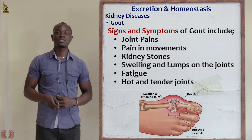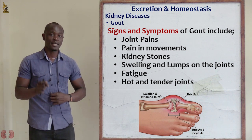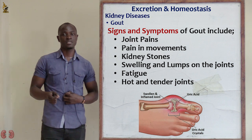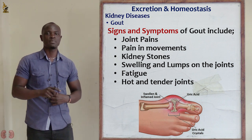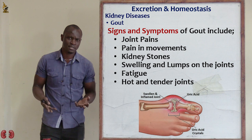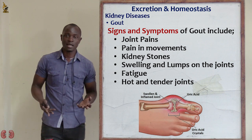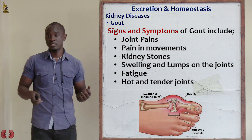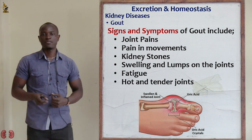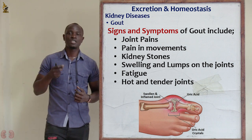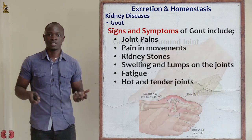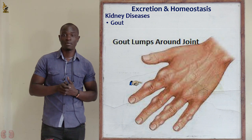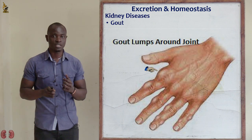Getting a kidney for transplantation is very expensive. To avoid all these problems, avoid excess proteins and excess alcohol — just avoid the causative agents for this disease. Another symptom of gout is strange lumps around the joints.